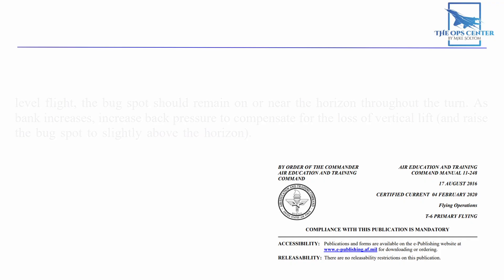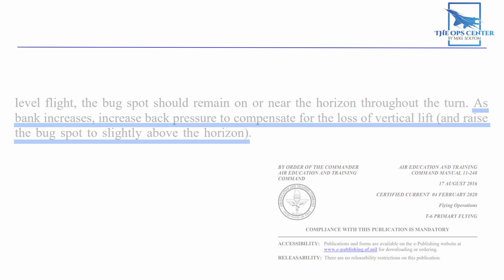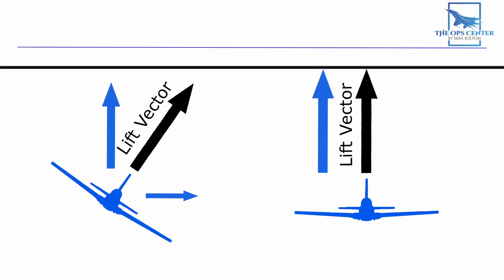Also keep in mind this additional note. As bank increases, increase back pressure to compensate for the loss of vertical lift and raise the bug spot to slightly above the horizon. Remember that as we roll the aircraft, the lift vector is also rolling so we need to compensate.